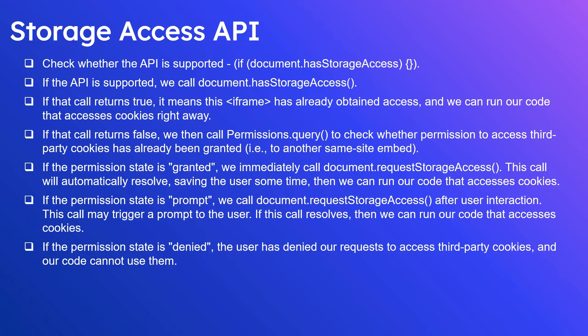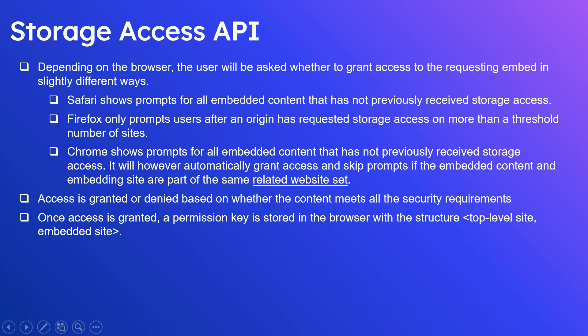If the permission state is 'prompt', we need to call document.requestStorageAccess after a user interaction — for example, a user clicking a button. This call may trigger a prompt to the user. If it resolves, we can run our code that accesses cookies. If the permission state is 'denied', the user has denied our request and we will not be able to access third-party cookies.